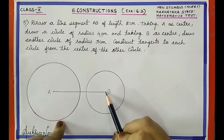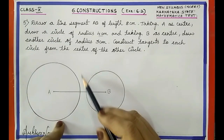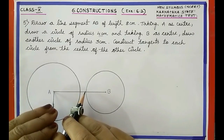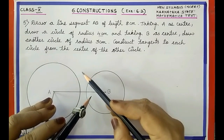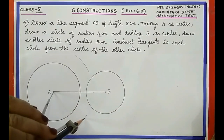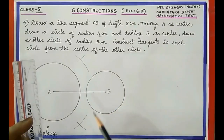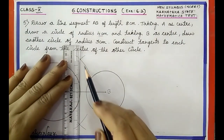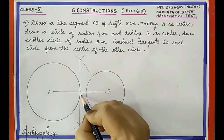You already know how to construct tangents from an external point to a circle. First we have to bisect the line AB and find the midpoint. Take a radius more than half of line AB, then draw arcs above and below the line — first from point A, then from point B cutting the previous arcs. Join the points of intersection to get the midpoint of AB. Let us call this point M.